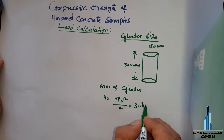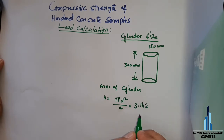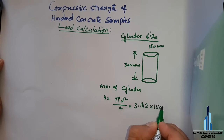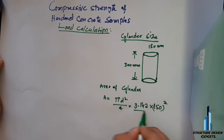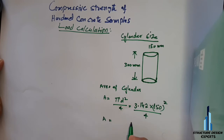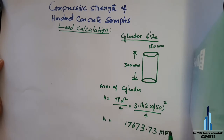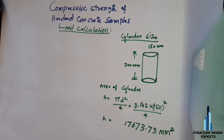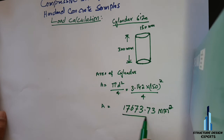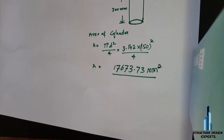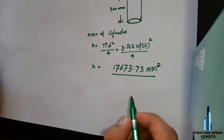So the formula is π × 150 squared, divided by 4. The area of the cylinder works out to 17,673.73 mm². Now we also have to find the area of the cube. Let's look at the size of the cube.